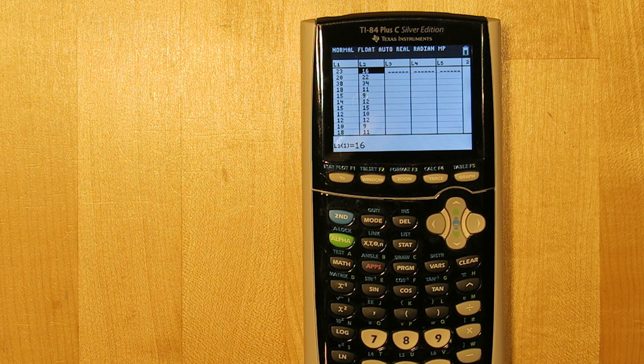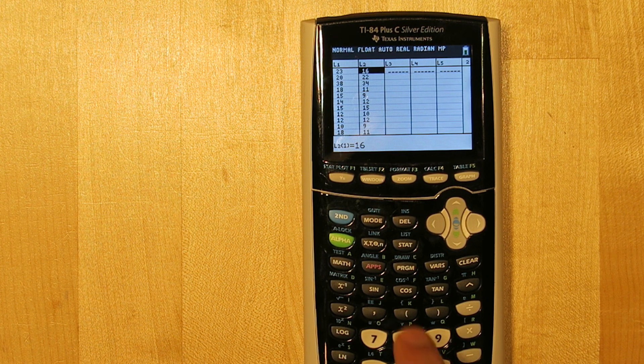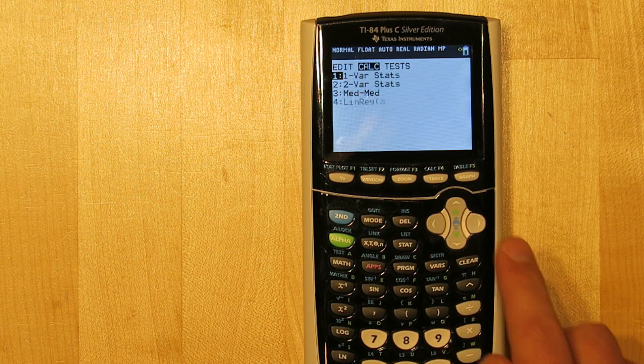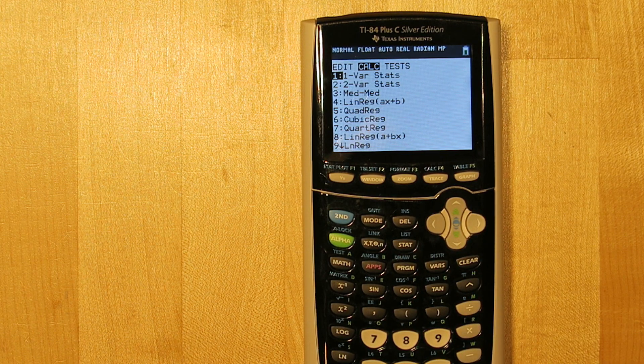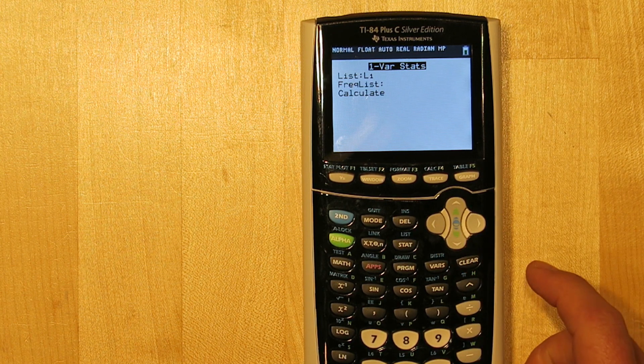Before we go, let me show you one more way to find the five number summary from your calculator. After inputting the data into the list, you can press Stat, go over to Calculate, and 1var Stats. Right now list 1 is set as the default, so we'll go down to Calculate and press Enter.